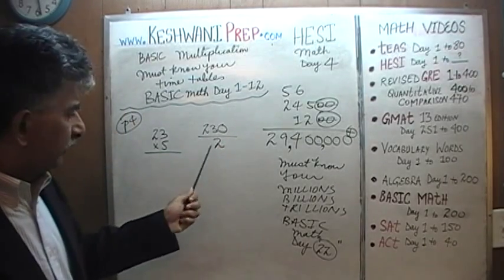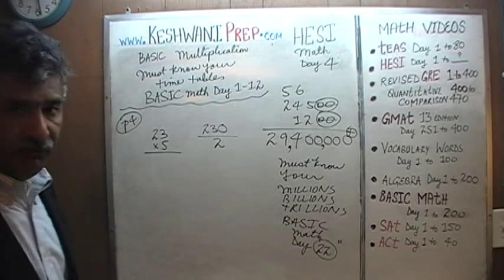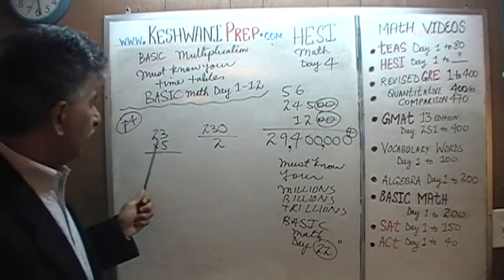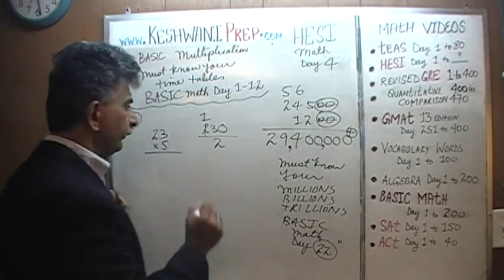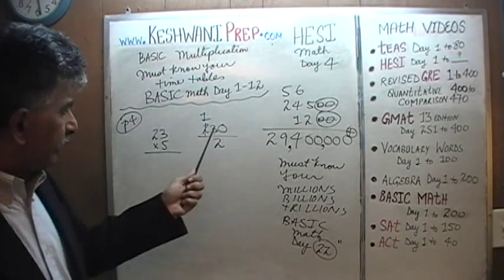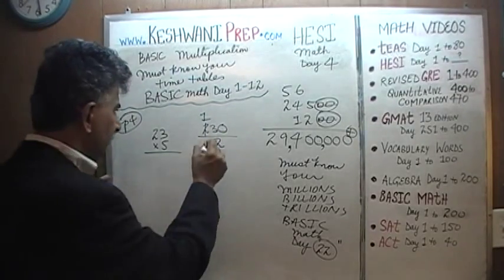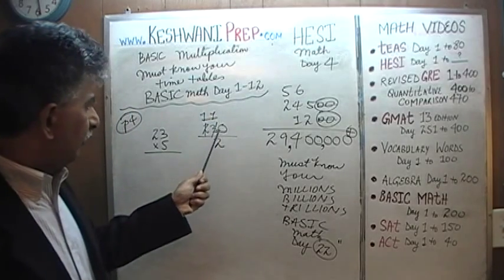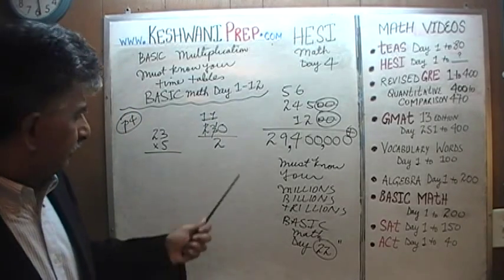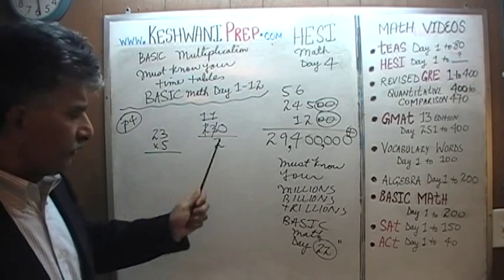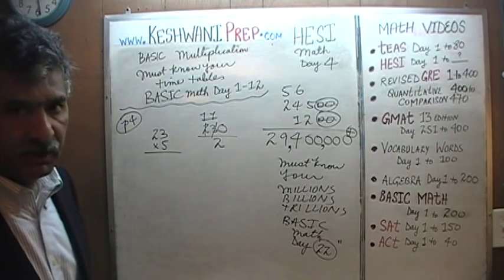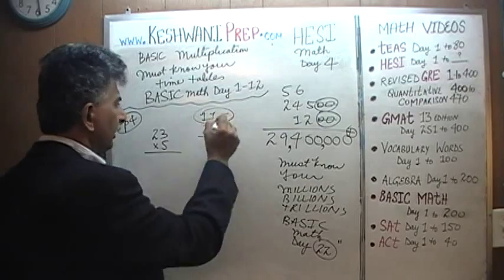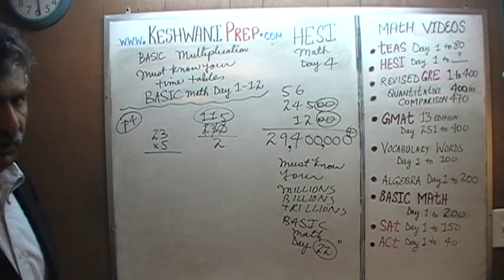If you divide two hundred and thirty by two — take half of that — that's the answer. How many twos does two have? Two has one two. How many twos does three have? Three has one two as well. The remaining one goes and joins the zero and becomes ten, and ten has five twos. One hundred and fifteen should be our answer.